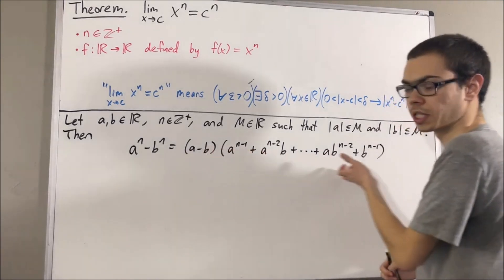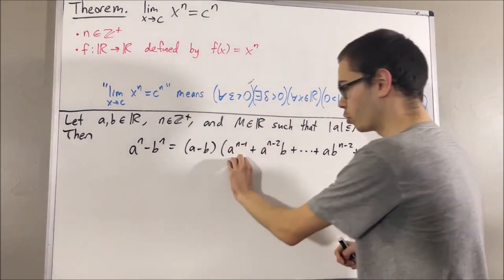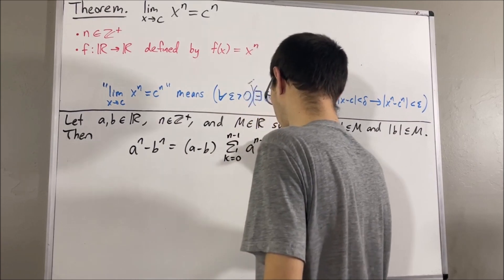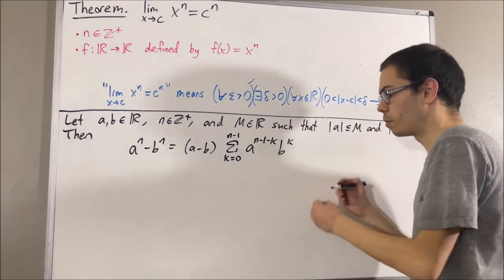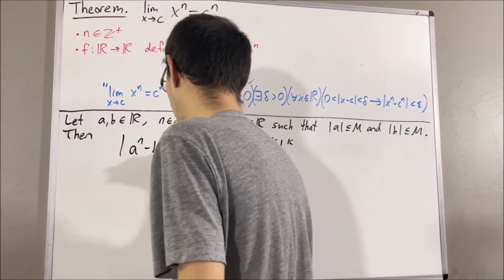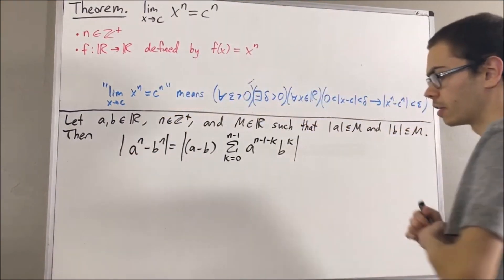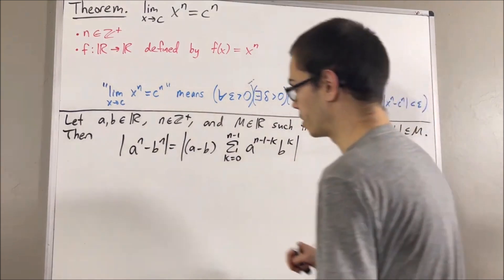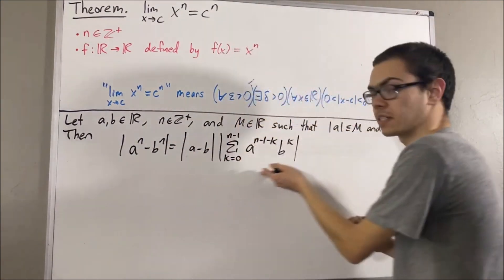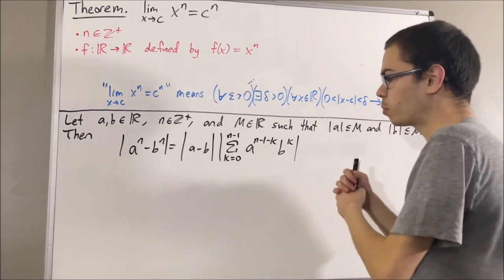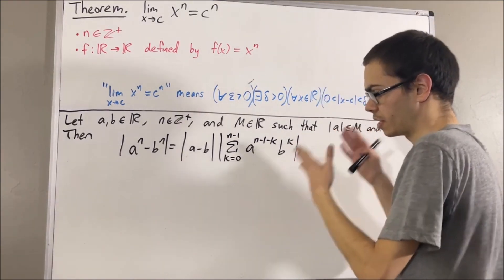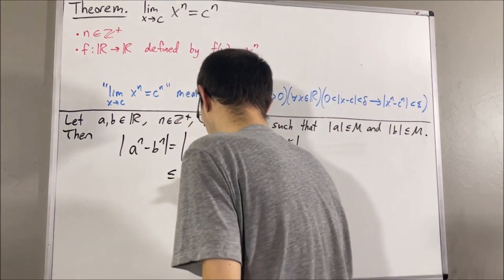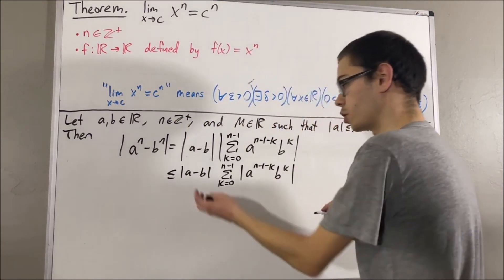We are going to consider the formula for a to the n minus b to the n, and write it in summation notation. We are going to consider the absolute value of this expression. We know that the absolute value of a product is the same as the product of absolute values, so we have that. And now, applying the triangle inequality — which tells us the absolute value of a sum is less than or equal to the sum of absolute values — we get the following.